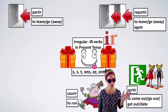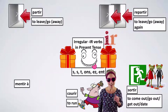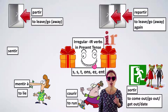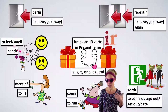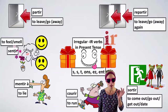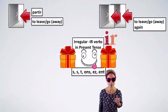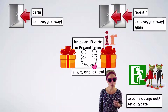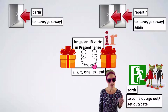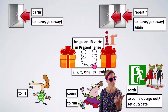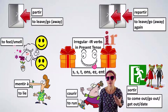Courir — to run. Think of a courier. Mentir à — to lie, as shown by the big nose. Sentir — think 'sentiments.' It means to feel, but also to smell. À vous: how do you say 'to leave, to go away'? Partir. 'To leave again'? Repartir. 'To come out, to go out, to get something out, to date'? Sortir. 'To run'? Courir. 'To lie'? Mentir à. 'To feel, to smell'? Sentir. They're all irregular IR verbs.